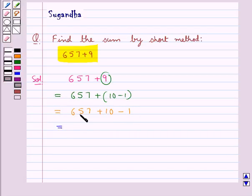Now 657 plus 10 is 667 minus 1 which is equal to 666. So we have got the sum 657 plus 9 is equal to 666.